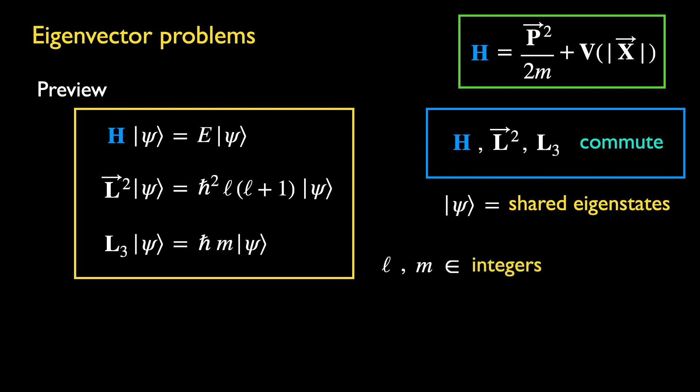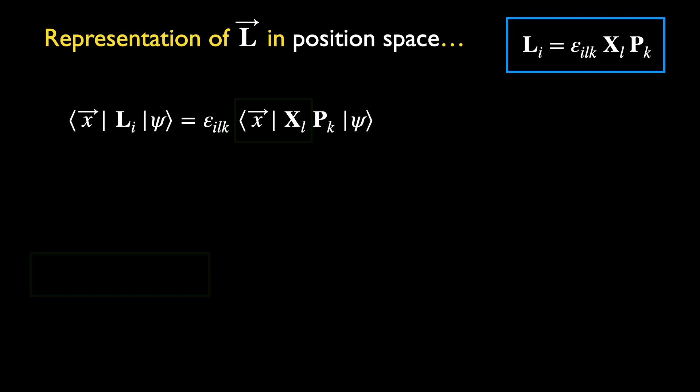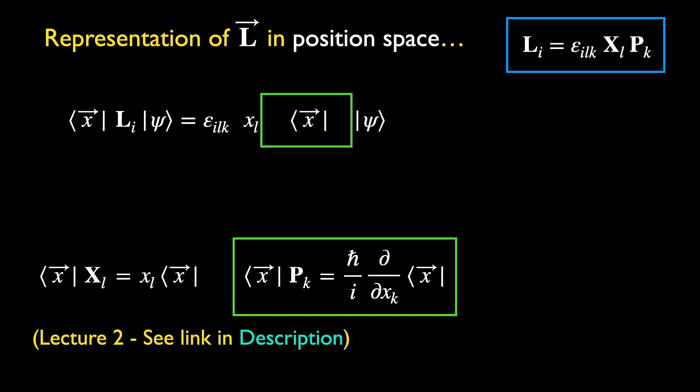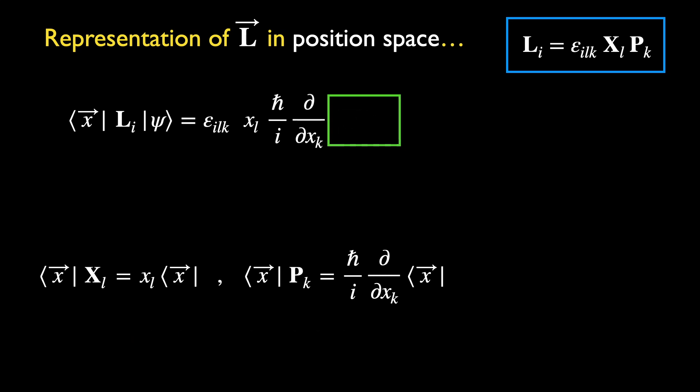Why this is so will be explained in a minute. We first examine the angular momentum operator in more details. Let's look at L in position space. What is the effect of Li on an arbitrary state ψ, projected into position space? Using the definition in the blue box, the position operator could act towards its left on the position state and be replaced with its eigenvalue. The effect of pk on bra x is also known, as we have derived it in lecture 2. This gives us the action of the operator Li on an arbitrary wave function ψ in position space.